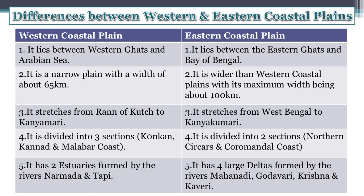Second: Western Coastal Plain is a narrow plain with a width of about 65 km. Eastern Coastal Plain is wider than the Western Coastal Plain, with its maximum width being about 100 km.